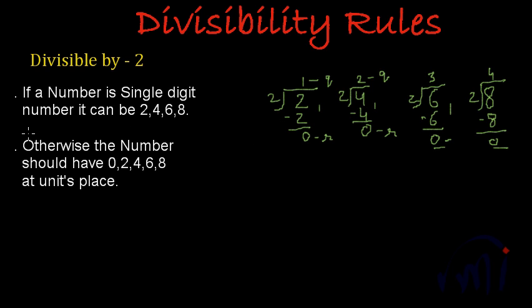So now let's move on to second point. We are saying otherwise, that means if the number is not a single digit number, the number should have 0, 2, 4, 6, or 8 at unit place. So if a number has 0, 2, 4, 6, or 8 at unit place, it becomes an even number. And any even number is actually divisible by 2.